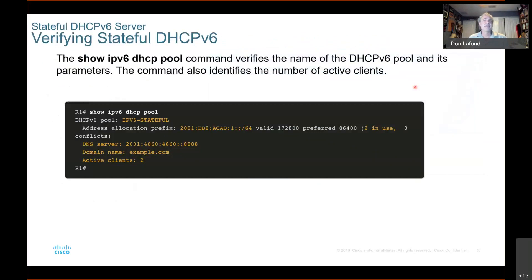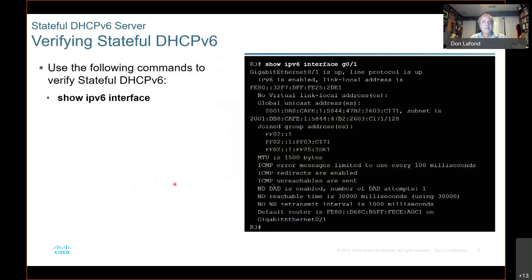Verifying stateful DHCPv6 — show IPv6 dhcp pool. You can see the pool that's been created, the prefix, and that two are currently in use. You can see the server, the domain name, and that there are two active clients. Remember, this is stateful, so you will see active clients because it is keeping track of those addresses. You can also use show IPv6 interface G0/0/1 and see that duplicate address detection is enabled with one DAD attempt.